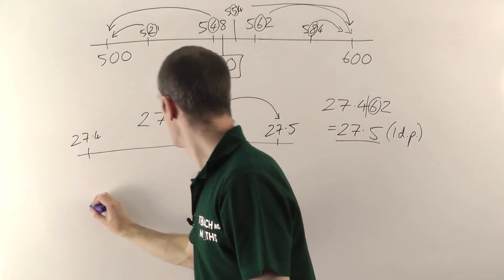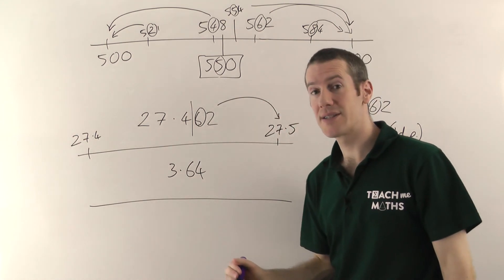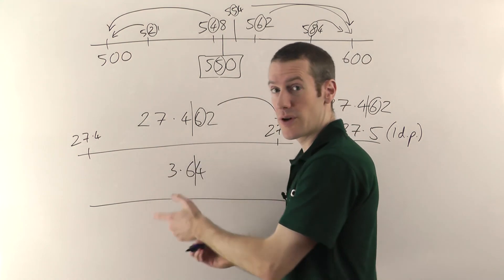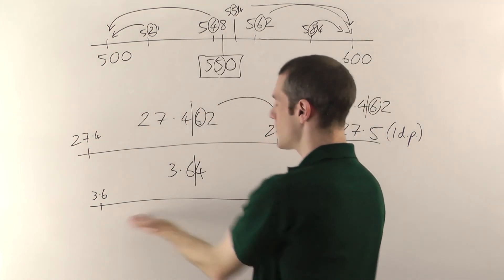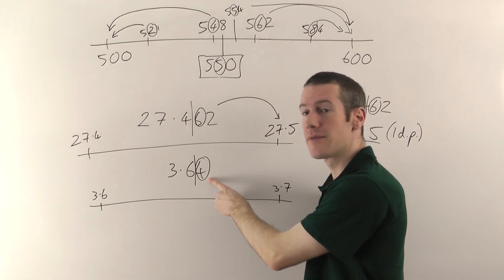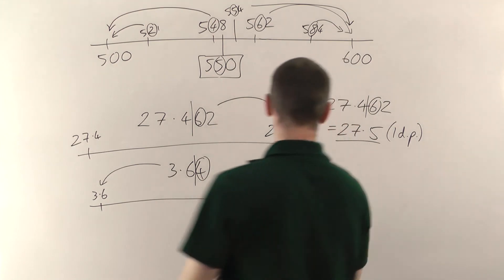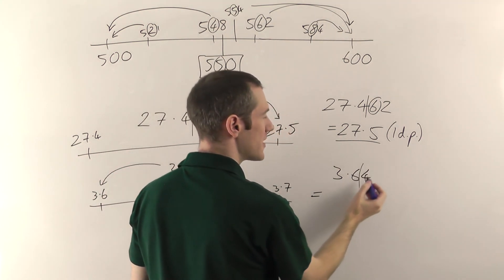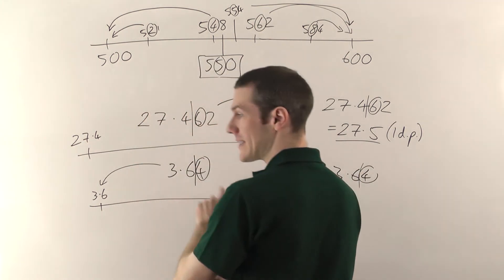Let's do another one: 3.64, rounding to one decimal place. One decimal place is here — it's either going to go down to 3.6 or up to 3.7. This number sits somewhere between 3.6 and 3.7. Look at the next digit — this time it's a 4, which is less than 5. So less than 5 means it's going to round down; this one goes down to 3.6. So: 3.64 to one decimal place — put your line after the first decimal place, look at the next digit — less than 5, so it goes to 3.6.